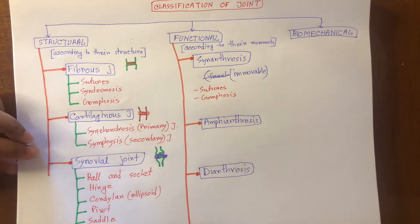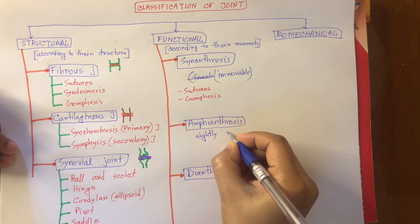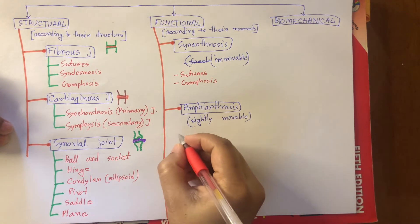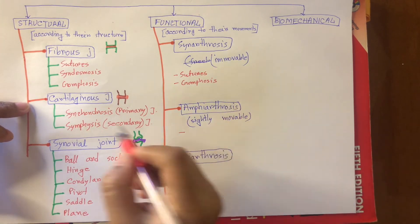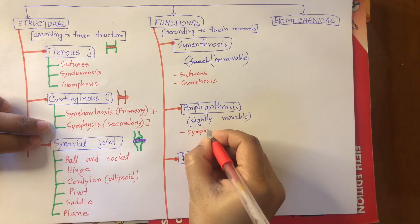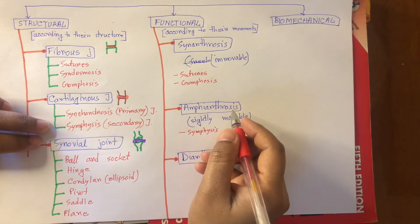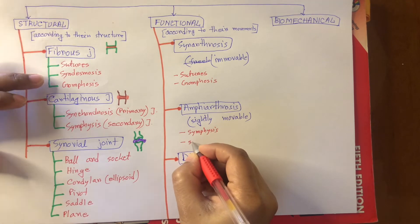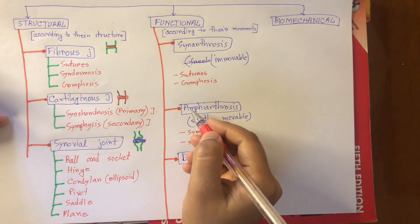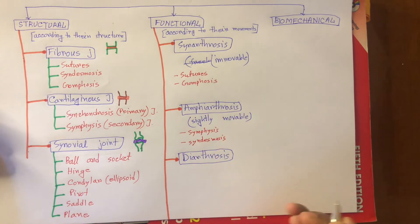Now let's see amphiarthrosis joints. These are slightly movable joints. These are also similar to cartilaginous joints — for example, symphysis, or secondary cartilaginous joint, is an example of amphiarthrosis. Syndesmosis is also an example: it is a fibrous joint, but this joint allows slight movement. So syndesmosis is an example of an amphiarthrosis joint.